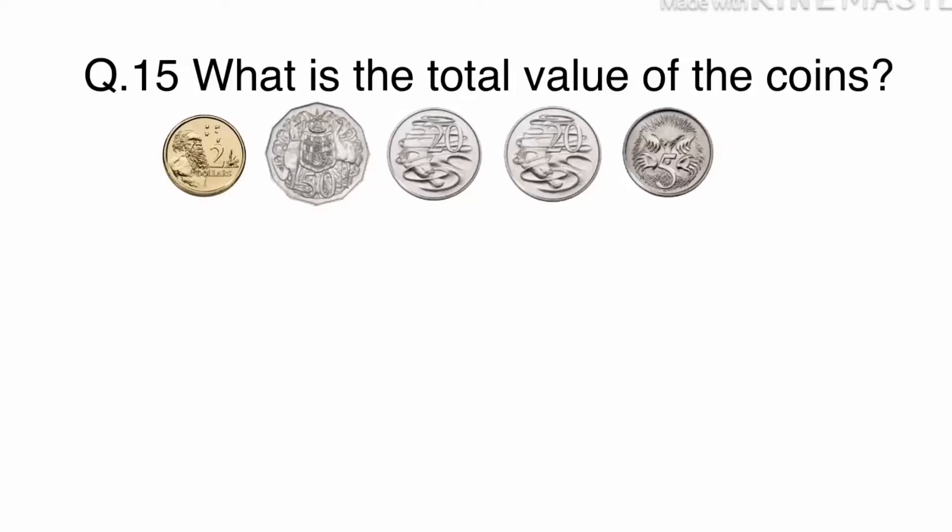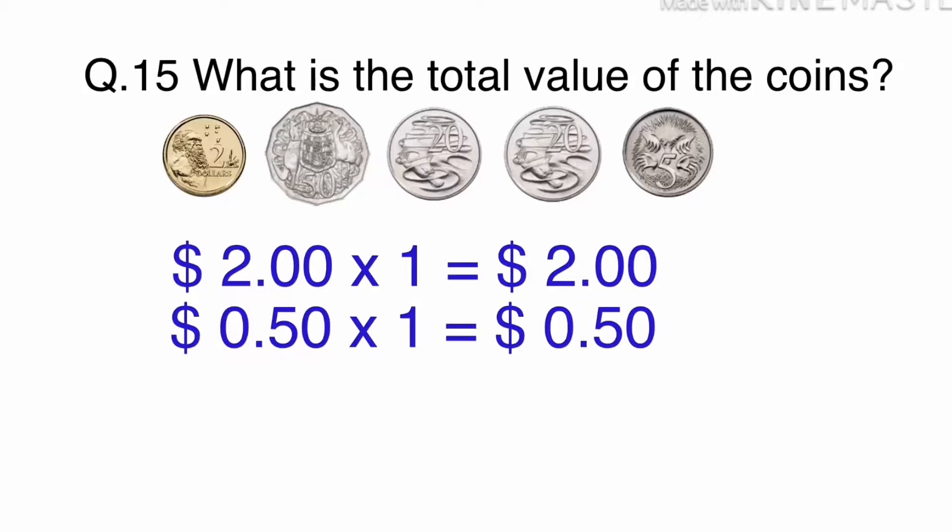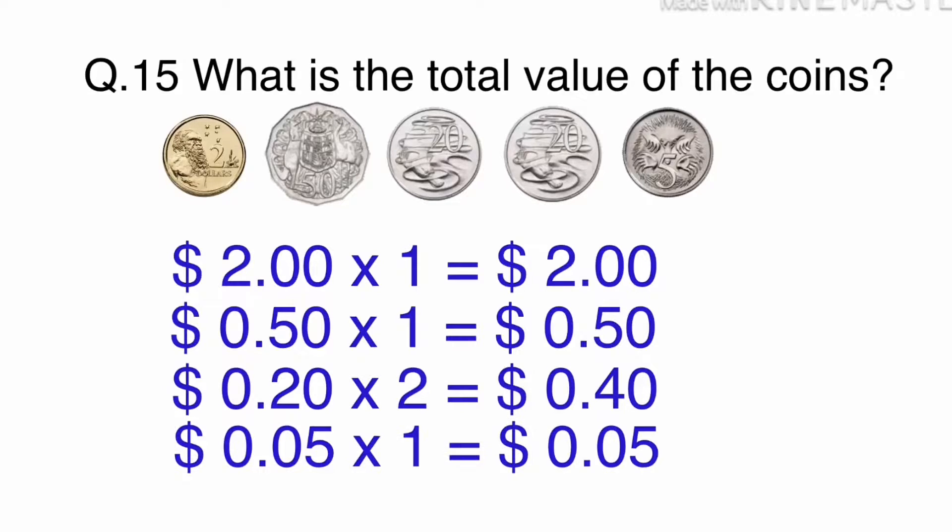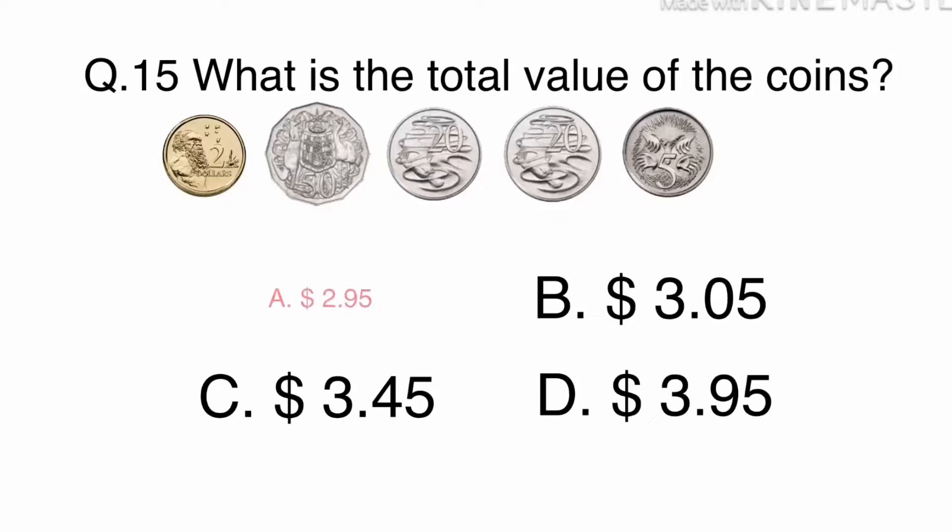Let's look at the coins. There is one $2 coin, one $0.50 coin, two $0.20 coins, and one $0.05 coin. Simply add all these together. The answer is A. $2.95.